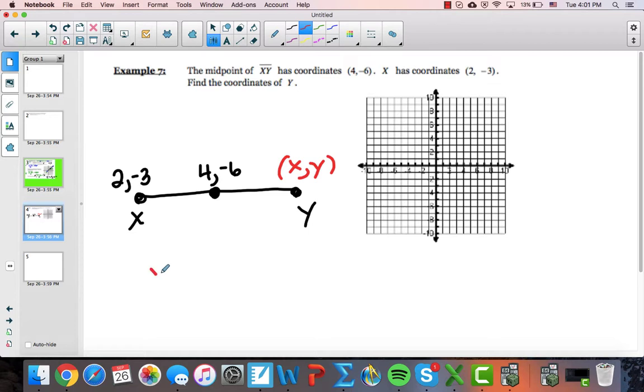Now, I'm going to actually use the midpoint formula. Again, x₁ plus x₂ over 2 equals the midpoint. But it's a little bit easier to see as a picture. So I'm going to do x plus 2 all over 2 equals 4.